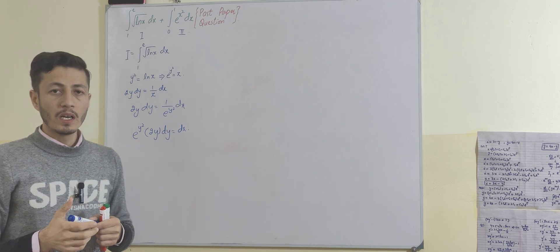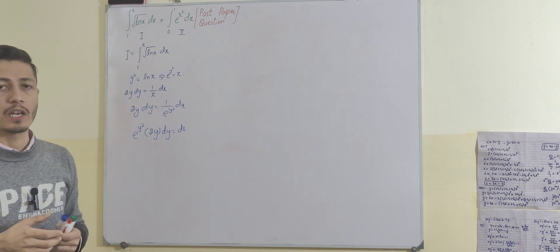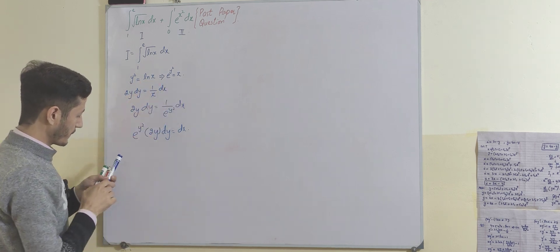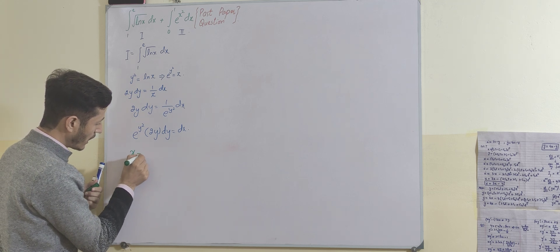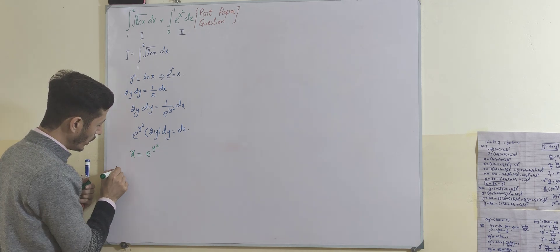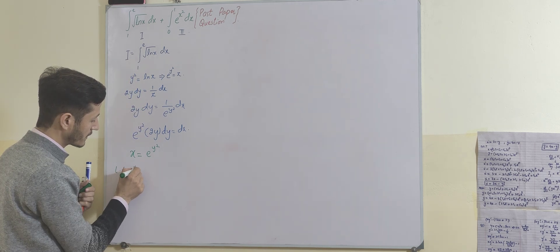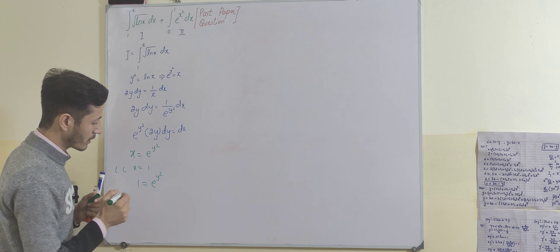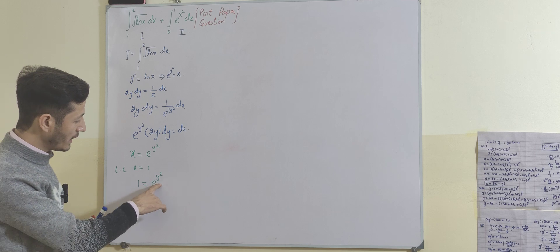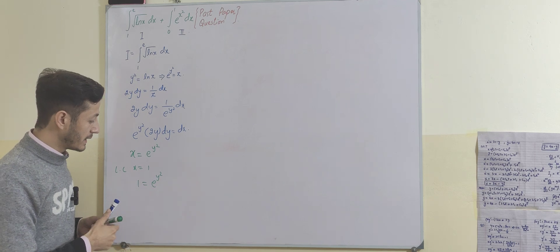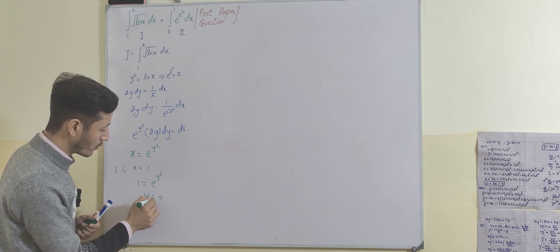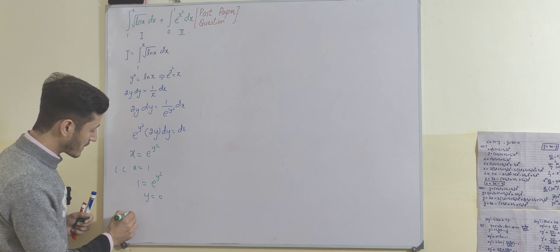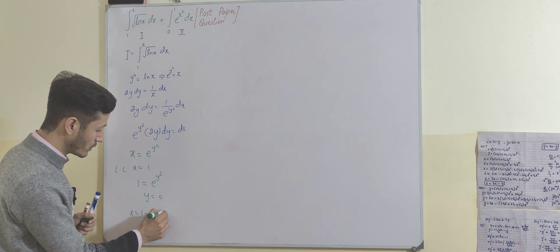Now let's see what happens to the limits when we substitute y² = ln(x), i.e., x = e^(y²). The lower limit is x = 1. Placing x = 1 gives 1 = e^(y²), so y² must equal 0, which means y = 0. Thus the lower limit x = 1 transforms to 0.